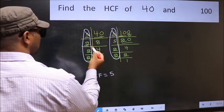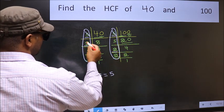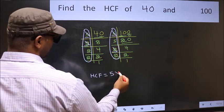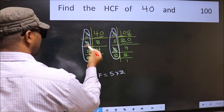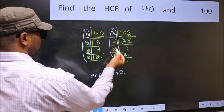Next number, 2. Do we have 2 here? Yes. So cut 2 right here. Next number, 2. Do we have 2 here? No.